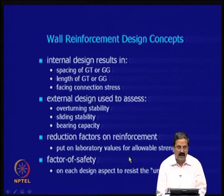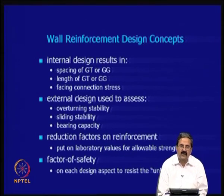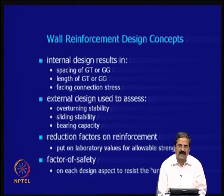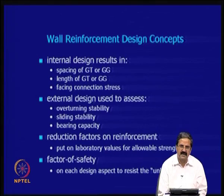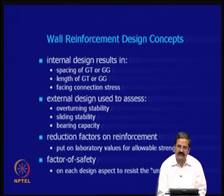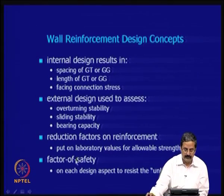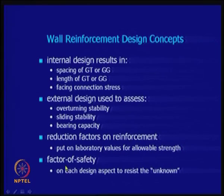Since geogrids are used, you must calculate allowable strength from laboratory tests and design for the design life — say 50 or 100 years. There is some immediate strength that gets reduced over time due to creep and degradation; that reduction must be accounted for in design. Reduction factors for reinforcement are important. Factor of safety covers both external and internal stability, and one should be aware of all these factors.